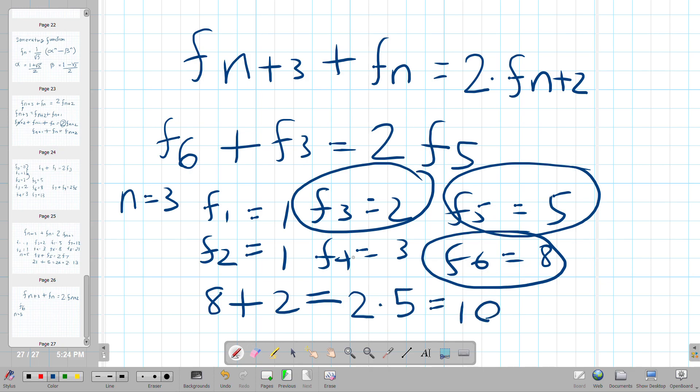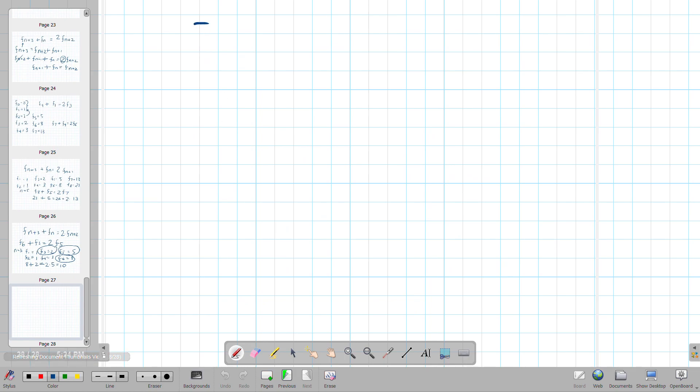Okay? So what another thing we can do is actually prove that this formula works. I mean, we just solved an example. So we start off with F of N plus three plus F of N is equal to two times F of N plus two and we know that F of N plus three is equal to the previous two terms. Right?